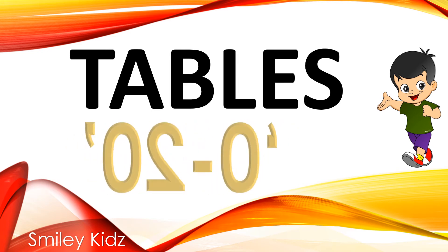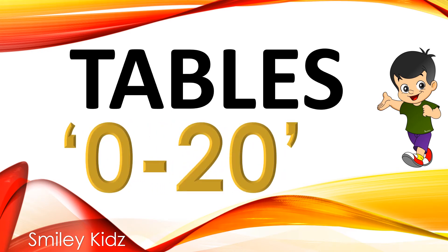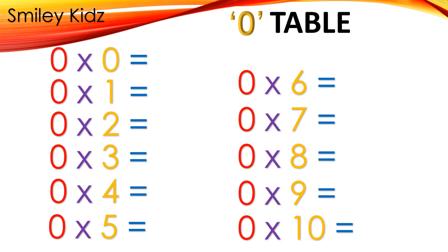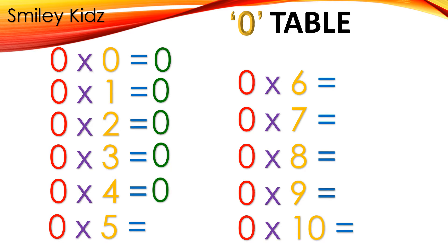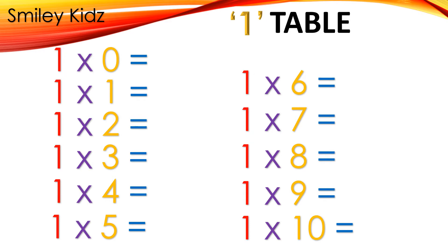Tables 0 to 20. Table 0: 0×0=0, 0×1=0, 0×2=0, 0×3=0, 0×4=0, 0×5=0, 0×6=0, 0×7=0, 0×8=0, 0×9=0, 0×10=0.